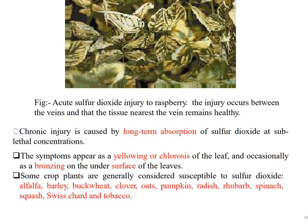Chronic injury is caused by long-term absorption of sulfur dioxide at sub-lethal concentrations. Symptoms appear as a yellowing or chlorosis of the leaf and occasionally as bronzing on the under surface of the leaves. Some crop plants generally considered susceptible to sulfur dioxide include alfalfa, barley, buckwheat, clover, oats, pumpkins, radish, spinach, squash, Swiss chard, and tobacco.